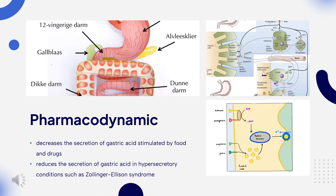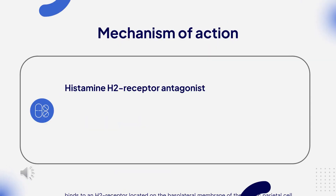Pharmacodynamics: Ranitidine decreases the secretion of gastric acid stimulated by food and drugs. It also reduces the secretion of gastric acid in hypersecretory conditions such as Zollinger-Ellison syndrome. Marked improvements in the appearance of the esophageal tissues have been observed by endoscopic imaging after ranitidine therapy.